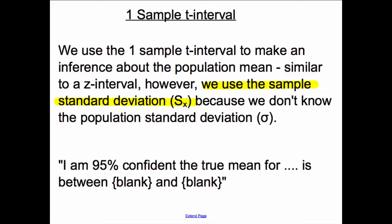However, we use the sample standard deviation s of x because we don't know the population standard deviation. A lot of people will get confused here and say, well what is the difference between a z and a t, and this is your key part right here. We use the sample standard deviation instead of the population standard deviation because we don't know it yet. In many cases that's actually true.